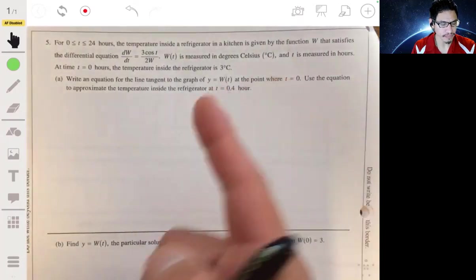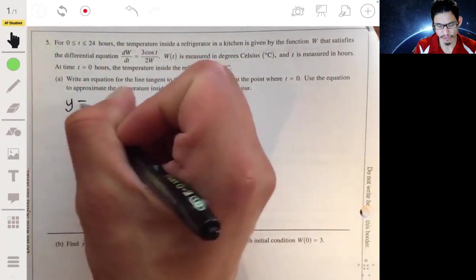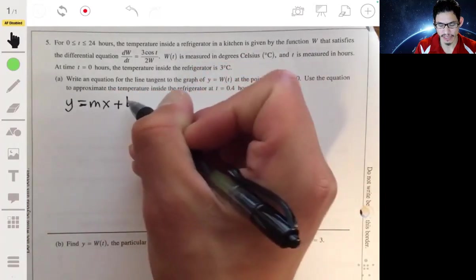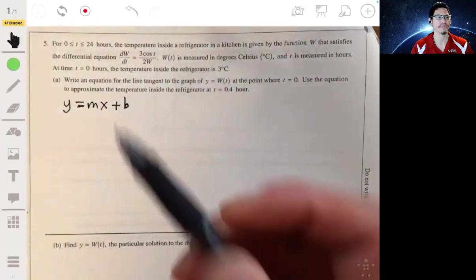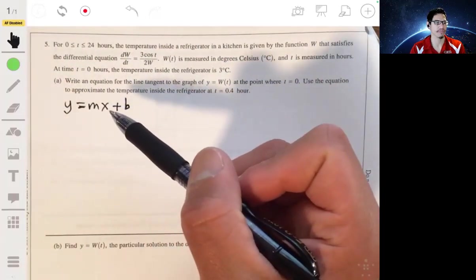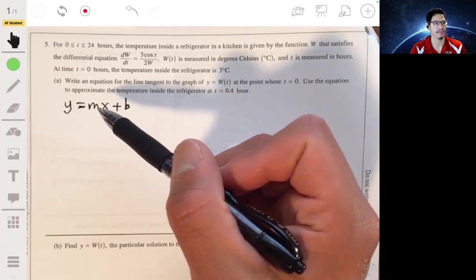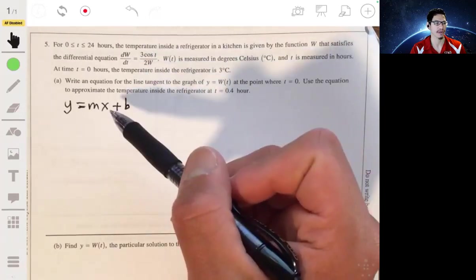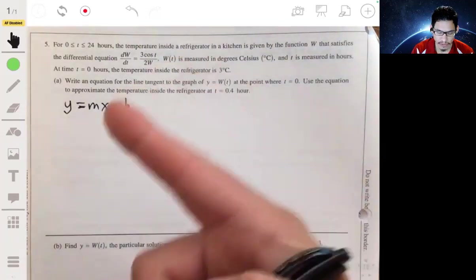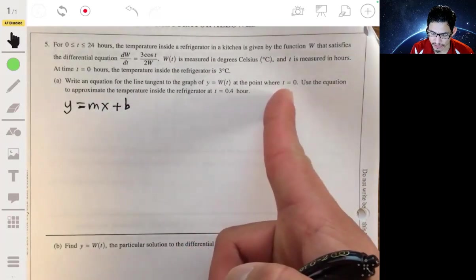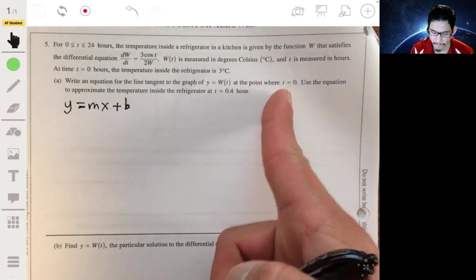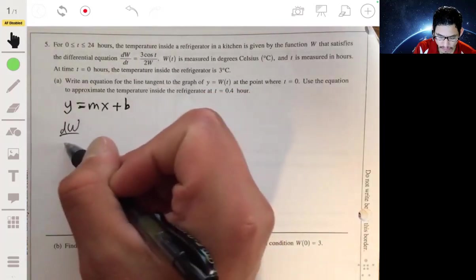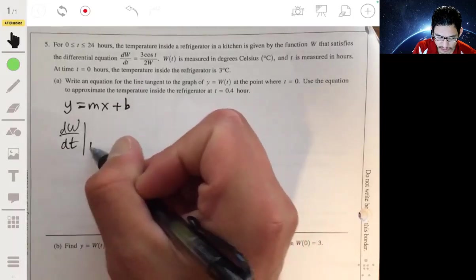Okay, so what we're going to do is first recognize that we can write an equation of a line or linear equation in the Y equals MX plus B form, and the M is the slope of the line, and the slope of the line is going to be the derivative at that point. So, since we're trying to find the point at T equals 0, we find the slope or DW/dt for T equals 0.